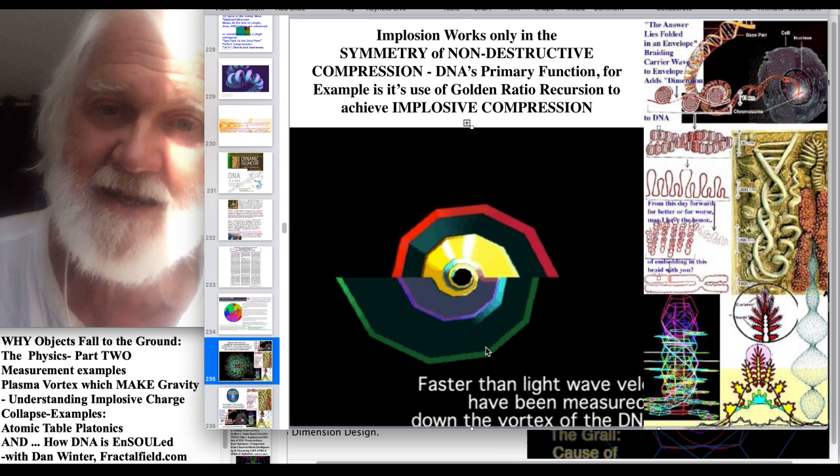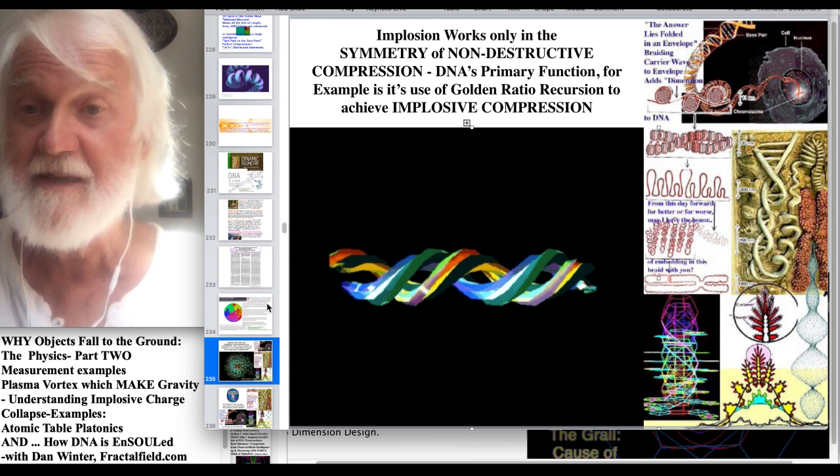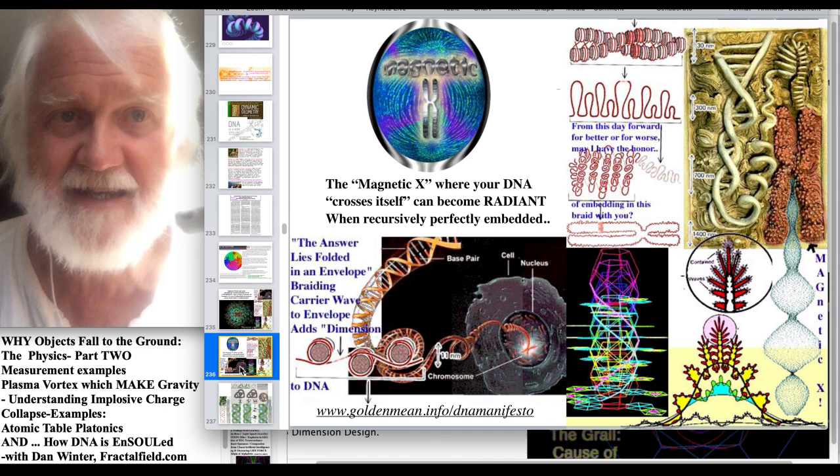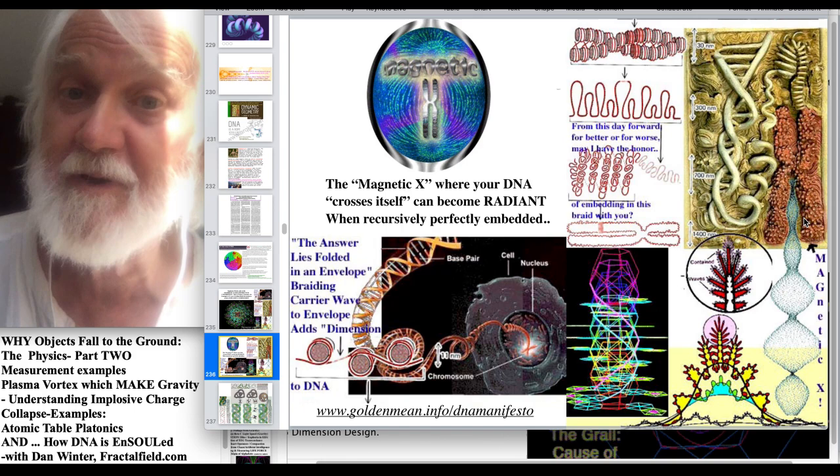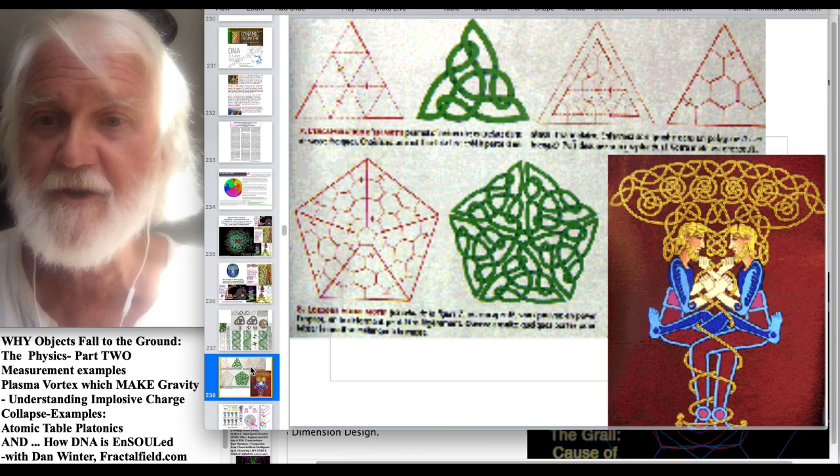So recursive braiding in DNA acts implosively, and that's how you get a soul. And it measurably responds to human bliss, heart coherence. Hint, think love. And this is called the magnetic X. So it's a wave within a wave waving. The answer lies folded in an envelope. Are you the X generation? This is the Celtic slipknot theory applied to DNA. And this is when DNA braids recursively. It palasterates, turns inside out.